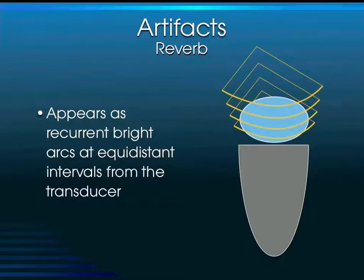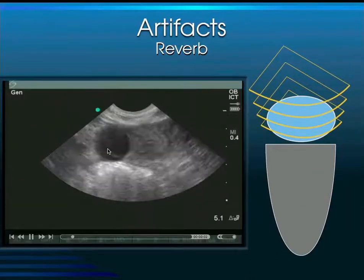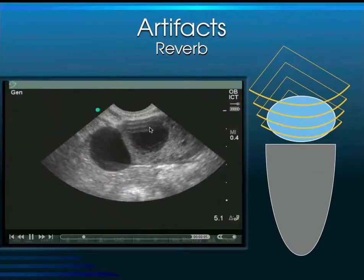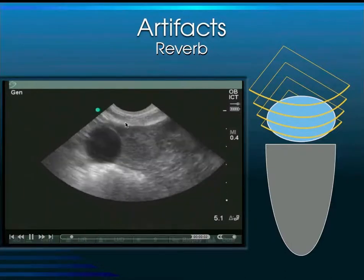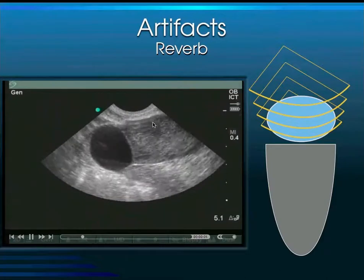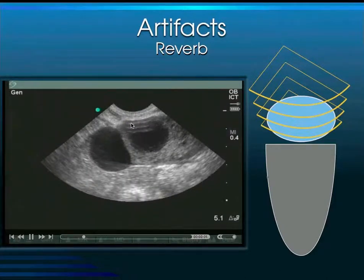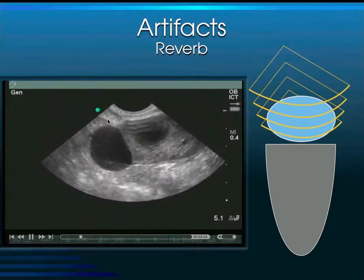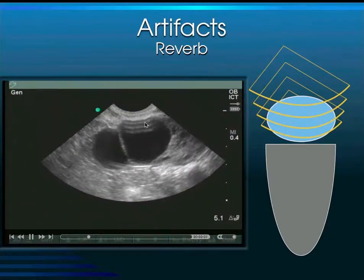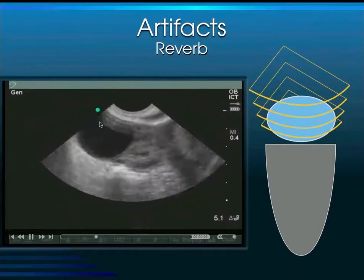Reverberation artifact appears as equidistant arcs from the transducer. When you see these equidistant reverberation artifacts — common with curved or phased array transducers — you don't want to mistake them for something anatomic or pathologic. For example, in an ovarian cystic structure, equidistant arcs visible on screen are simply reverberation artifact, not a clinical finding.